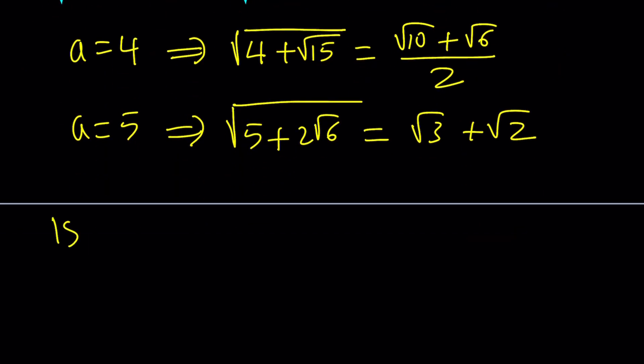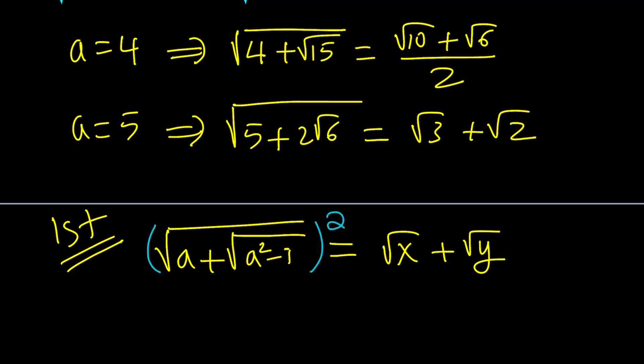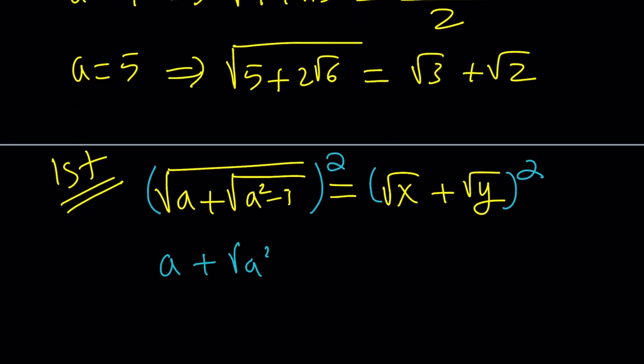Let's start with the first method. This method is called no pain, no gain. We're going to call this expression. We know or we kind of feel that this expression can be denested. In other words, it can be written as the sum of two radicals, such as square root of x plus square root of y. And we're going to square both sides because we want to get rid of the radicals as much as possible. This gives us a plus the square root of a squared minus 1 equals x plus y plus 2 times the square root of xy.